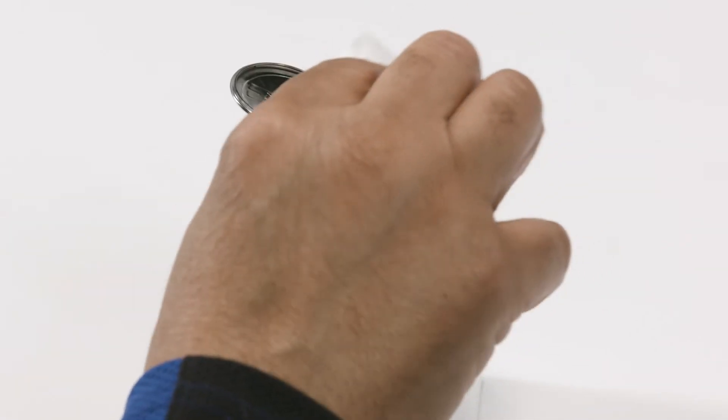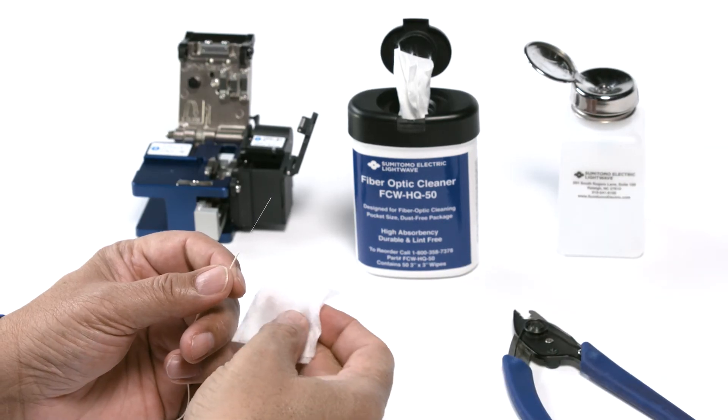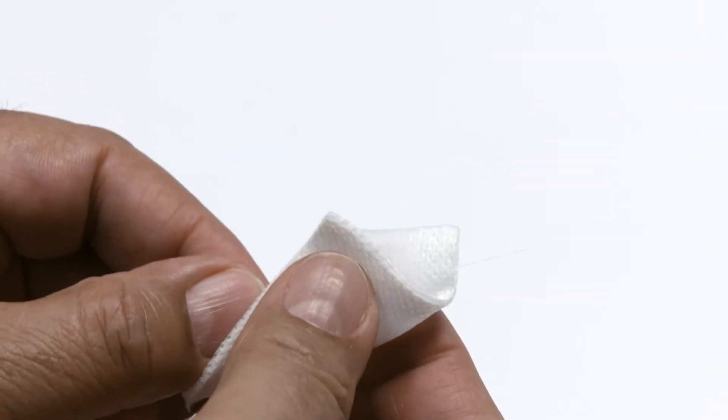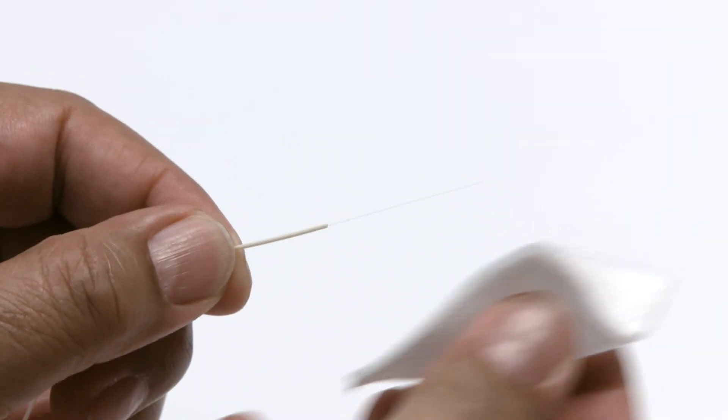Moisten a lint-free cloth with glass fiber cleaner. Use the moistened lint-free cloth to remove buffer residue, exposing a clean cladding layer.